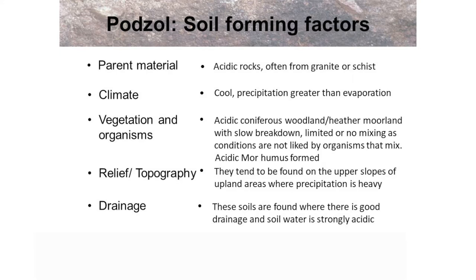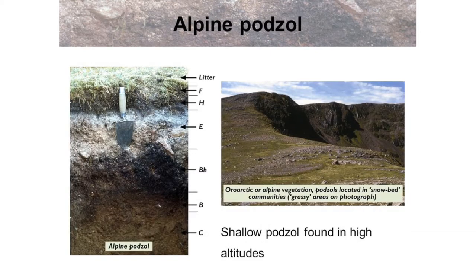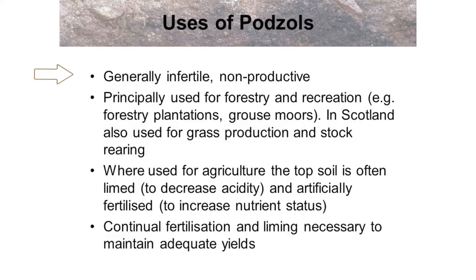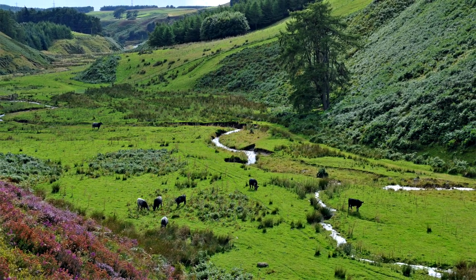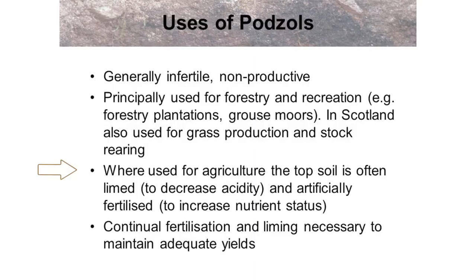In terms of topography, climate and vegetation, a number of Podzol subgroups have been identified in Scotland, including Peaty Podzols, Humus Podzols and Alpine Podzols. Alpine Podzols are shallow Podzols found in areas of high altitude. Podzols are generally infertile and are physically limiting soils for production. They are principally used for forestry and recreation, such as forestry plantations and grouse moors. In Scotland they can also be used for grass production and stock rearing of sheep and cattle. Where used for agriculture, the topsoil is often limed to decrease the acidity and raise the pH, and artificially fertilised to increase the soil's nutrient status, though continual fertilisation and liming are necessary to maintain adequate yields.